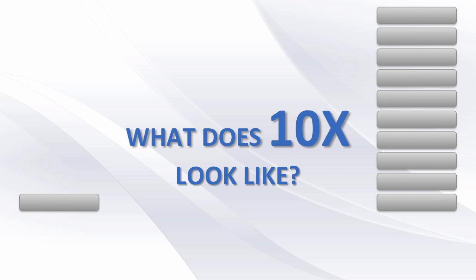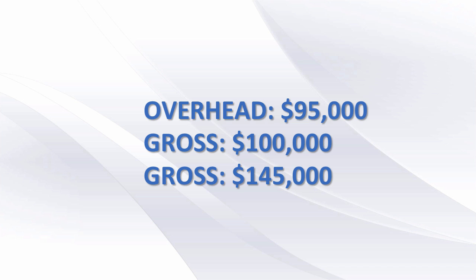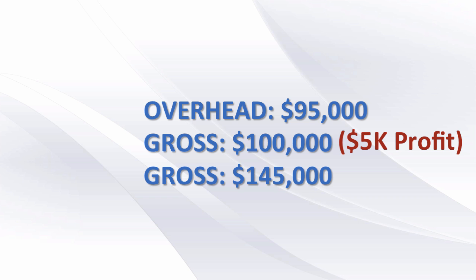Let me give you a couple examples. Here I have two stores, maybe side by side. One store is bringing in $100,000 and the second store is bringing in $145,000. That doesn't look like 10x — that looks like 45%. But stores have overhead. So let's say rent and expenses come to $95,000. Then store one is making $5,000 and store two is making $50,000. That's 10x more profit, and that's only with overhead.